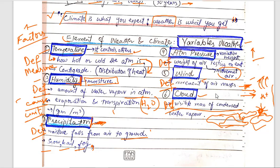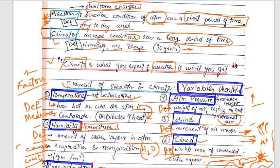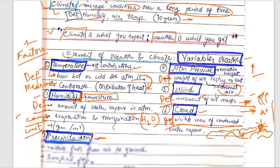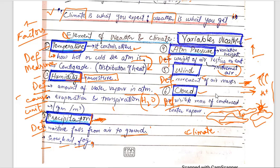For a five-mark question, first define climate with a brief explanation, then explain weather with its definition. Then define each factor with a heading and explain it in two to four lines. First mention weather, then climate, then list the elements with headings and brief explanations. This was a very simple question.